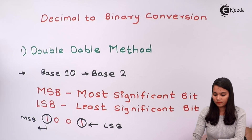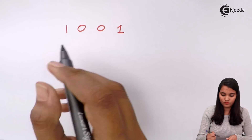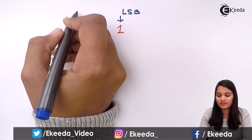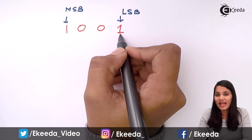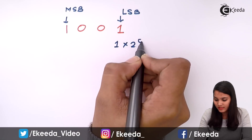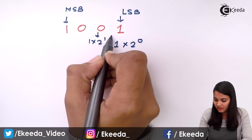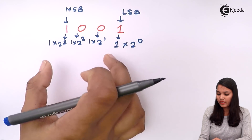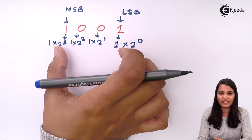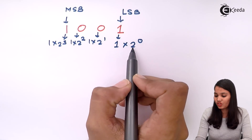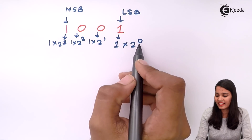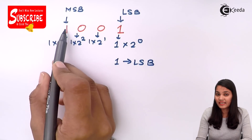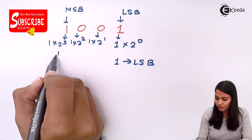Now let's see the weightage value. We have the number 1, 0, 0, 1. As I said, the rightmost 1 is the LSB and the leftmost 1 is the MSB. So the LSB will have the lowest weightage — that is, 1 × 2 raised to 0. Then 1 × 2 raised to 1, 1 × 2 raised to 2, and 1 × 2 raised to 3. From the weightage values you can also identify the MSB and LSB numbers. The power of 2 for the rightmost number is very low — that is 0 — therefore 1 is the LSB. And the power of 2 for the leftmost number is higher — that is 3 — therefore that is the MSB.